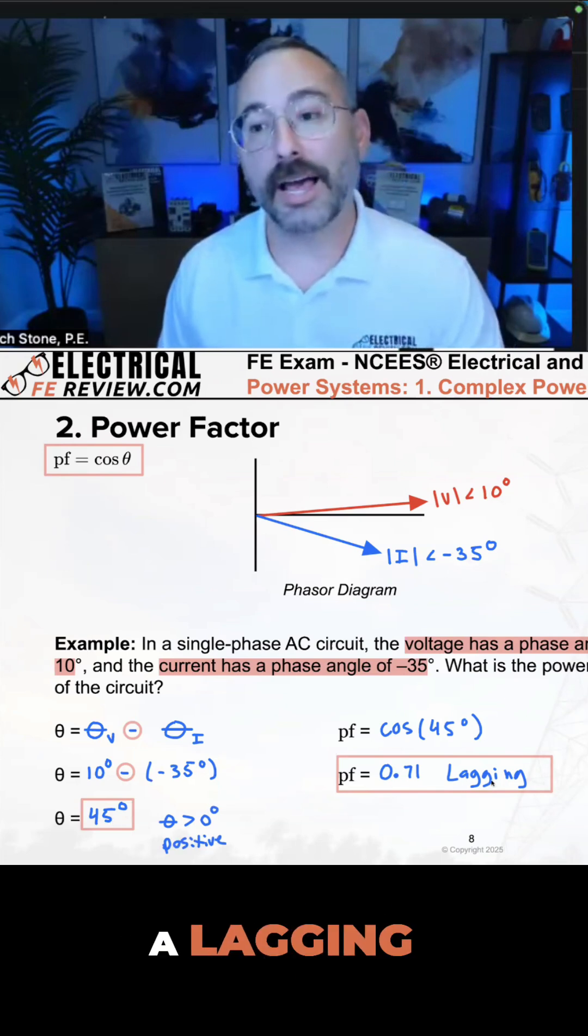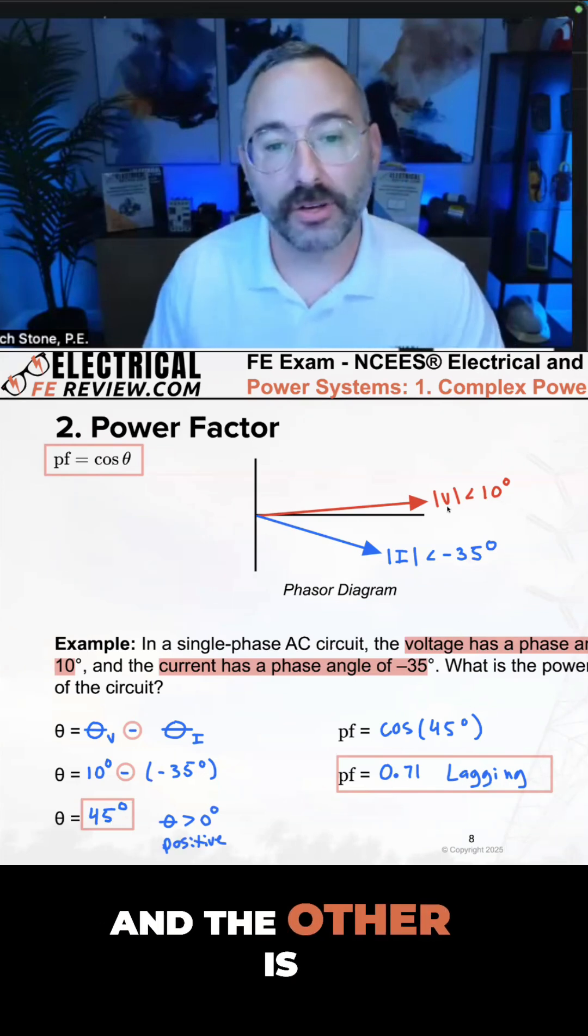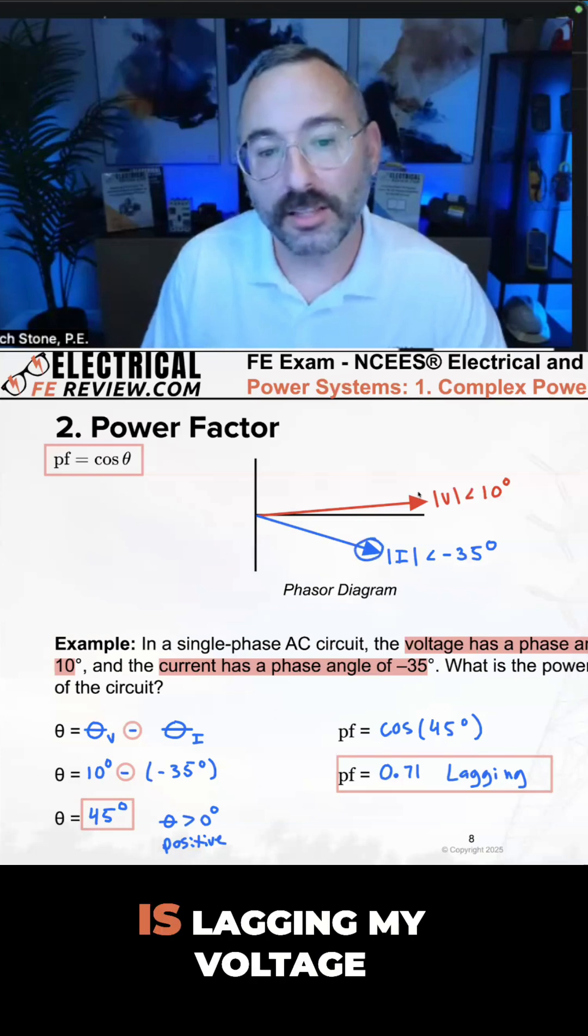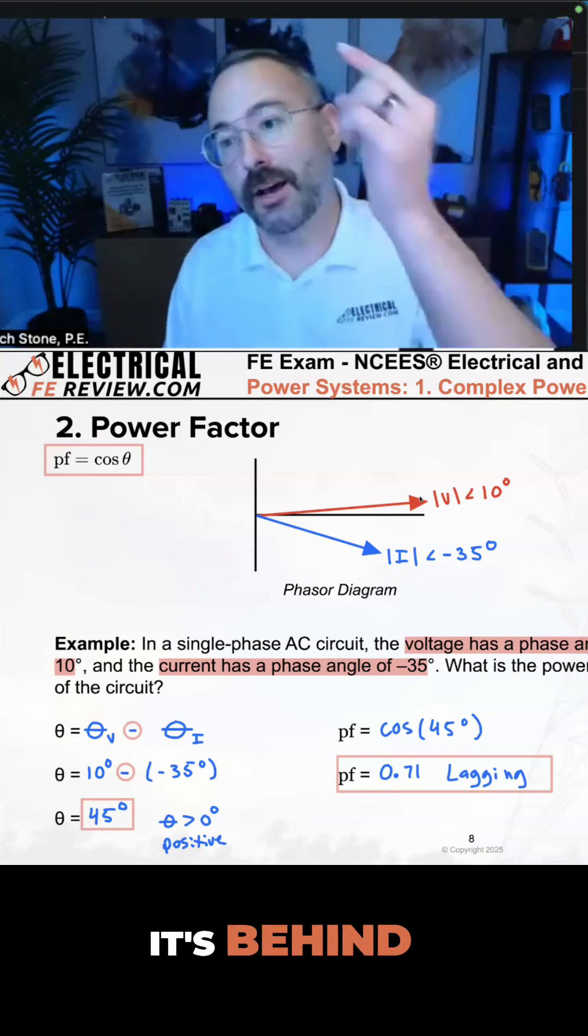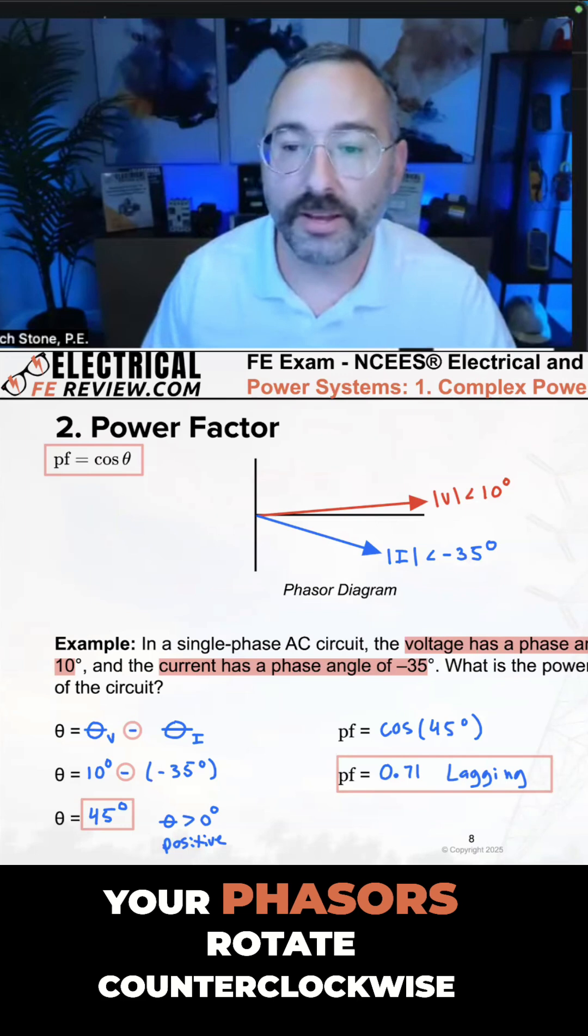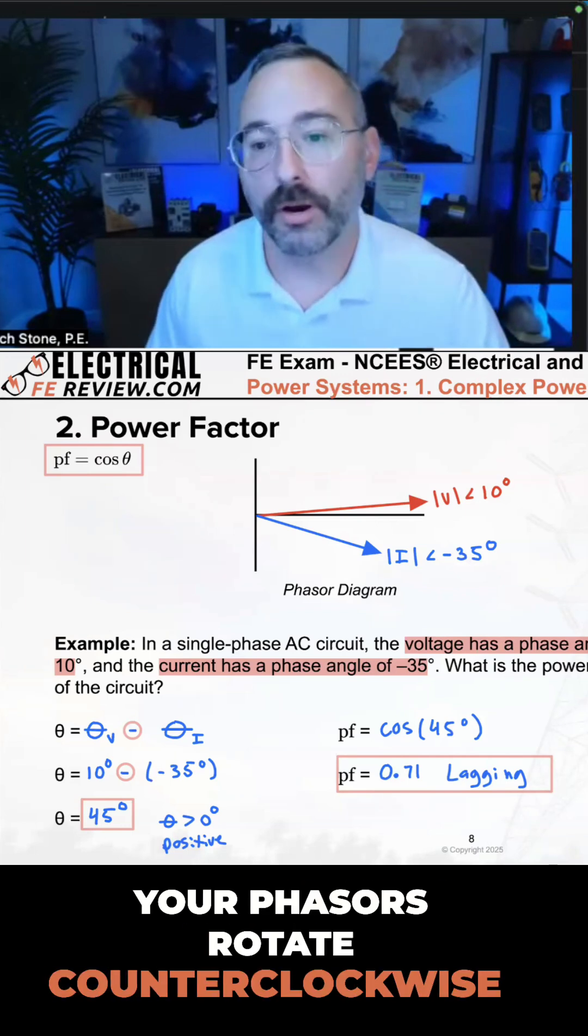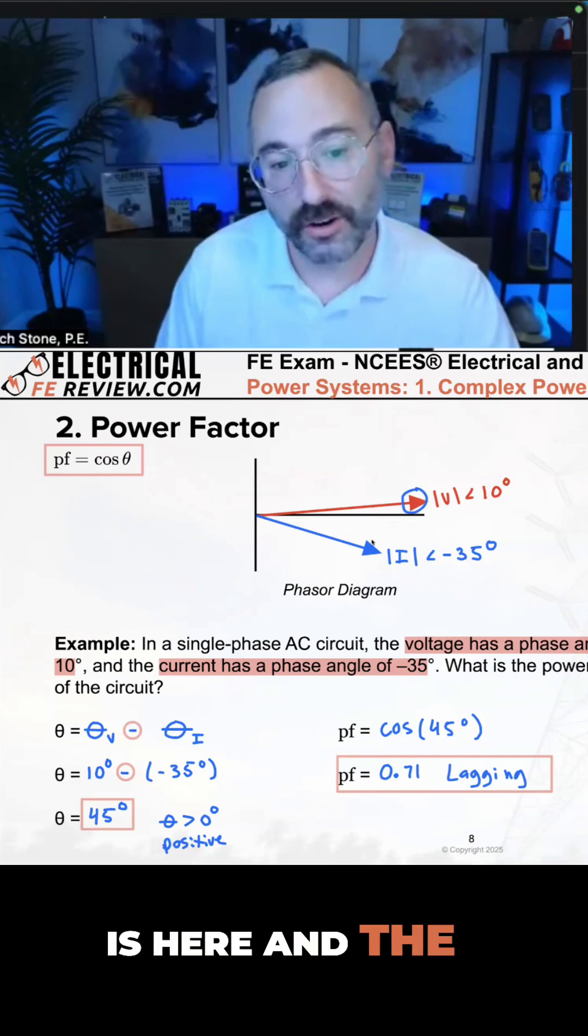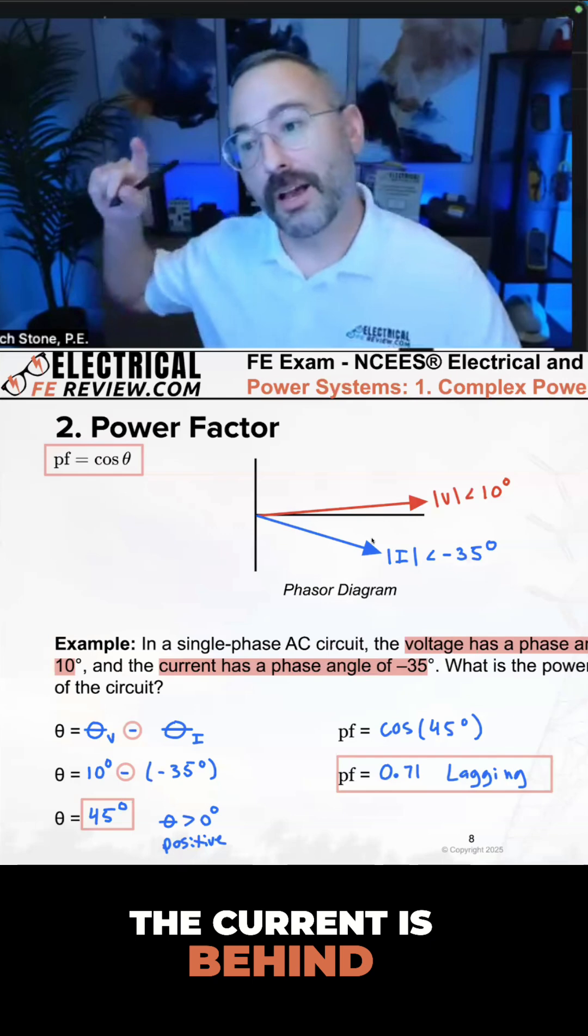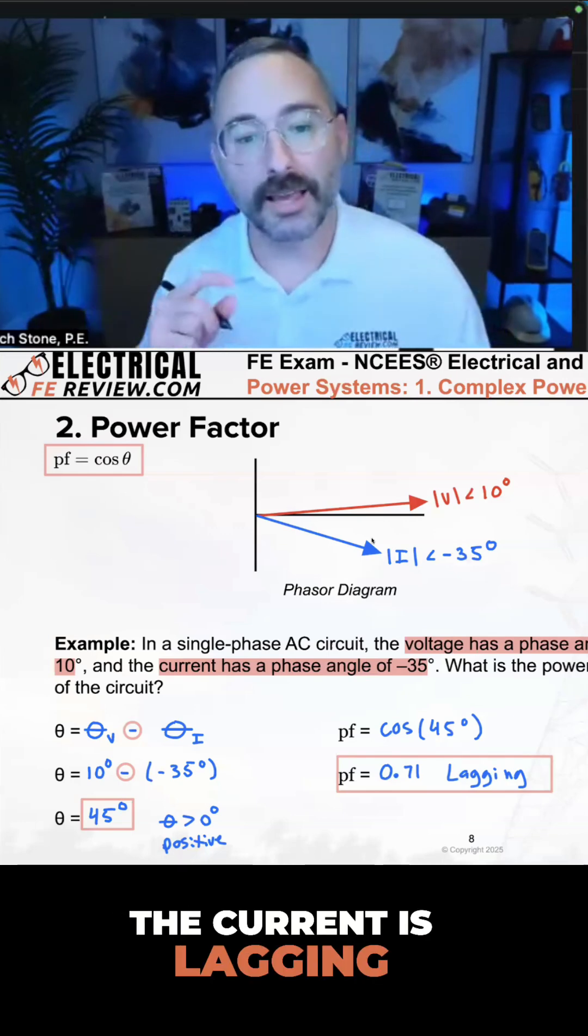That tells me it's a lagging power factor. And the other way: my current right here is lagging my voltage. It's behind my voltage. Your phasors rotate counterclockwise, so if the voltage is here and the current is here, the current is behind the voltage—the current is lagging the voltage.